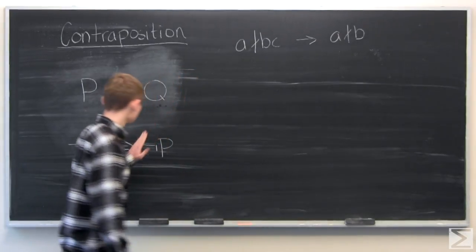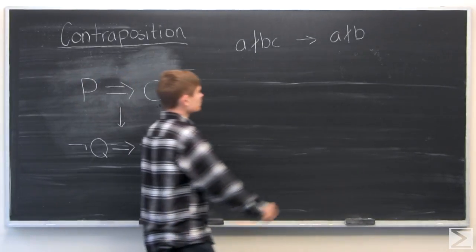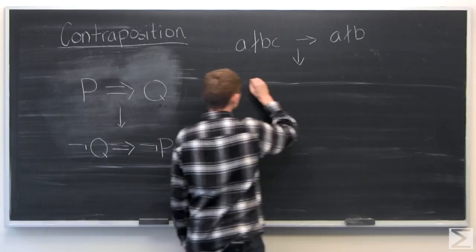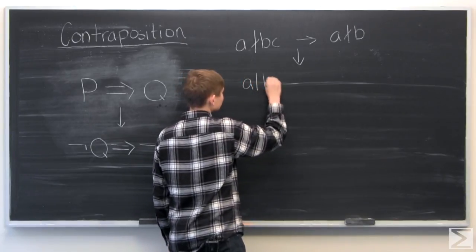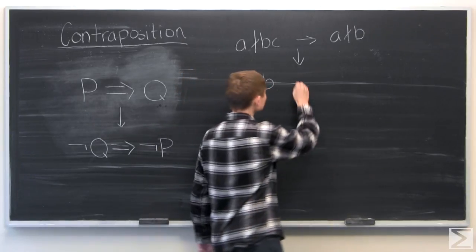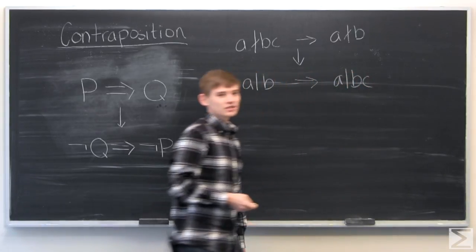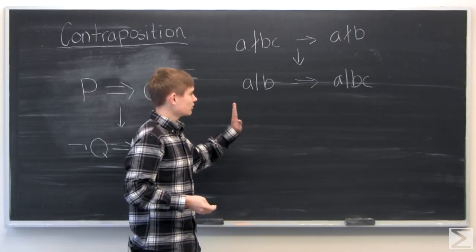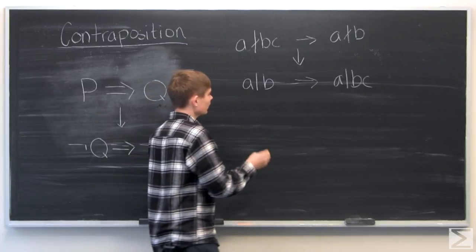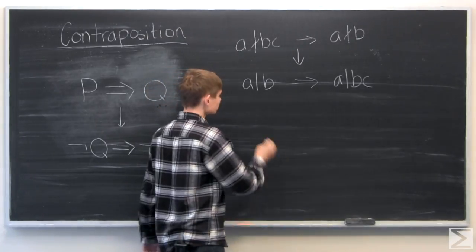And so proving this with contraposition, we want to show that if a divides b, then a will divide b times c, which is something we've proved before, but I'll prove it real quick anyways.